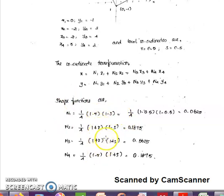N1, N2, N3, N4 are the shape functions. Already we have given the value of R and S. We have to substitute the R and S values. We have to find N1, N2, N3, N4. After finding N1, N2, N3, N4 shape functions...